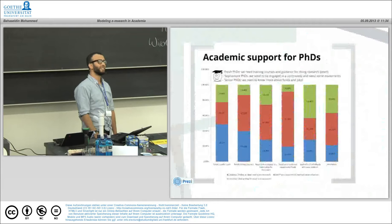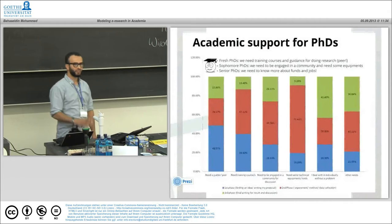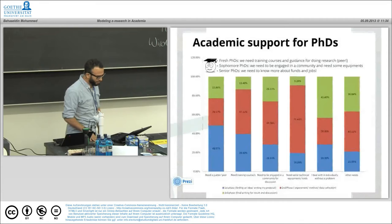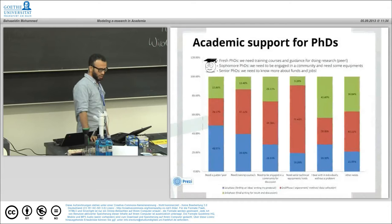Regarding support and what kind of academic support PhDs need: concerning literature review, we have three levels—fresh PhD students who start their project, sophomore students in the middle, and senior PhD students. Fresh PhD students said they need training courses and guidance. Those in the middle need to be engaged in a community and need equipment. Senior PhD students need to know more about funds and jobs. This is logical for senior students.